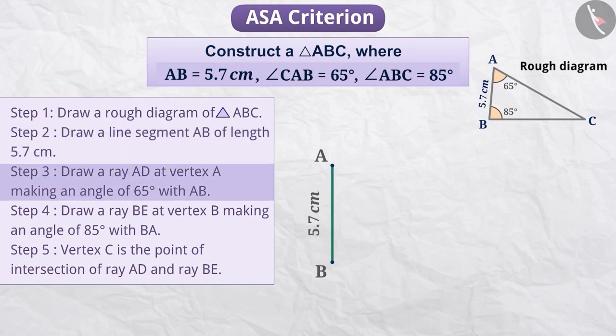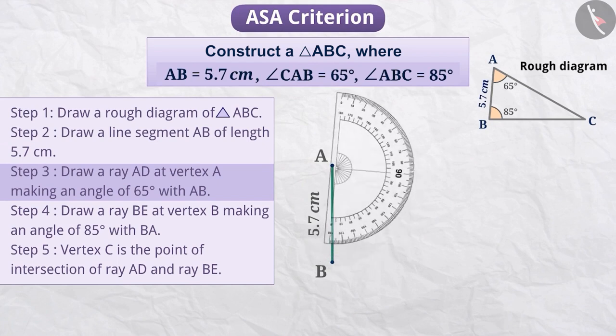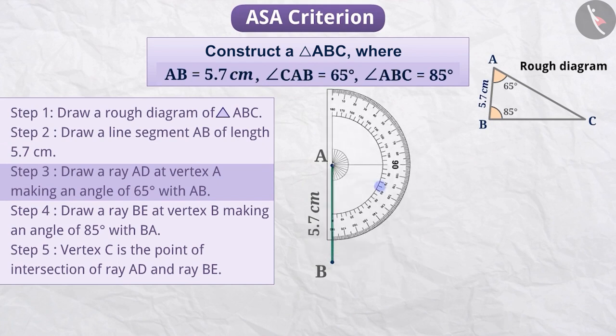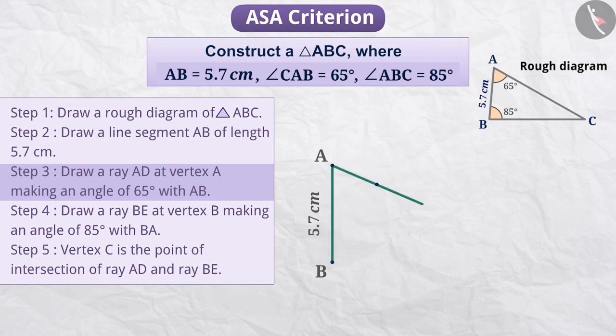Step 3. Since it is given in the question that angle CAB measures 65 degrees, with the help of a protractor, we will construct an angle of 65 degrees at vertex A. Which means, we will draw a ray at vertex A making an angle of 65 degrees with AB. We will label the ray AD. By the given condition, C must be somewhere on AD.